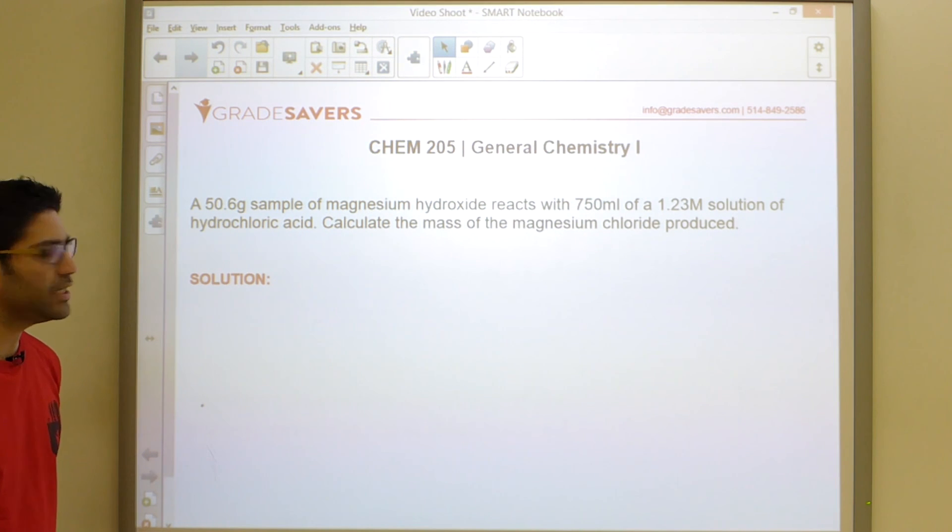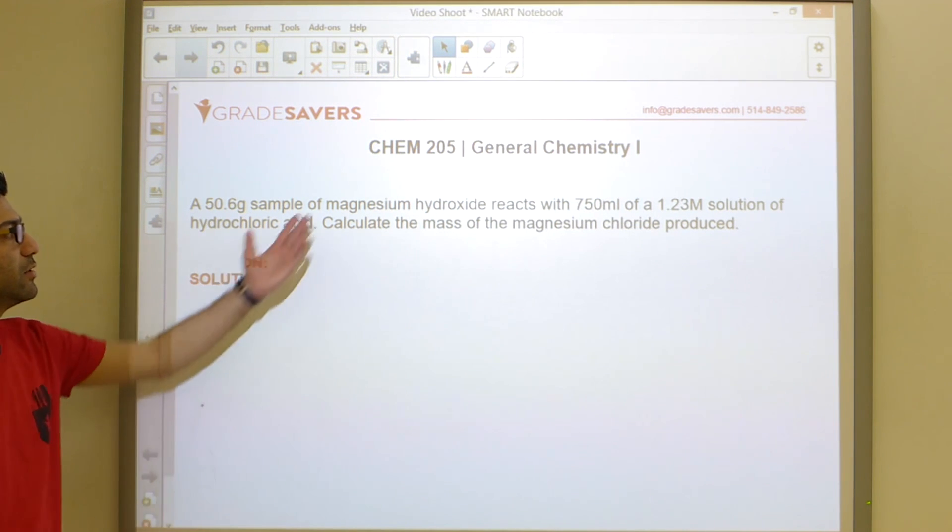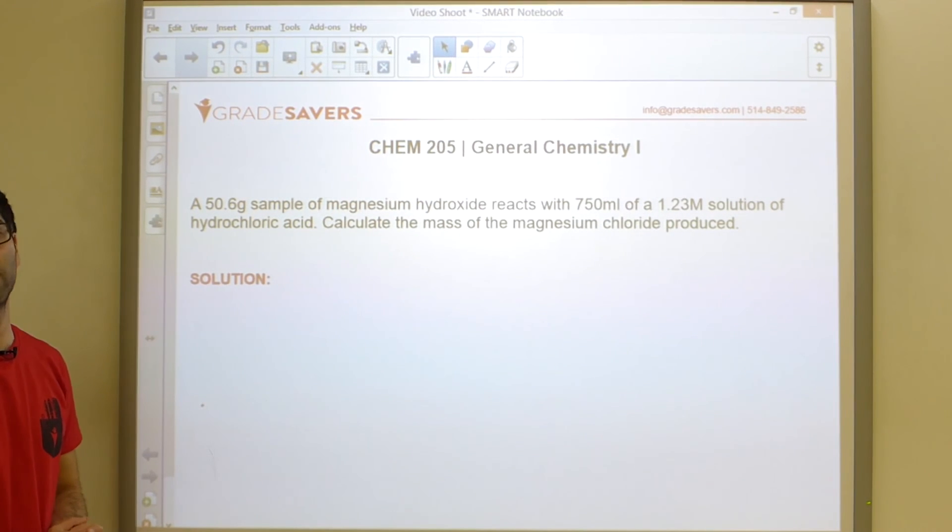The first step of solving any stoichiometry problem is to come up with a balanced equation. It is absolutely imperative that you guys know how to go from names to formulas and formulas to names. It should be almost second nature for you guys to write the equation corresponding to this problem immediately.